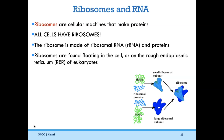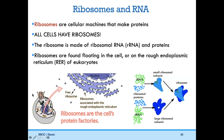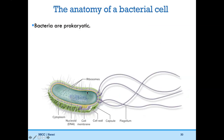In eukaryotes, ribosomes can be found in one of two places: floating around in the cell if they're making proteins for the cytoplasm, or found on the rough endoplasmic reticulum (RER). Ribosomes are the cell's protein factories. Free ribosomes hang out in the cytoplasm, or just outside the nucleus you can find the rough endoplasmic reticulum studded with ribosomes — which is why it looks rough under a microscope.